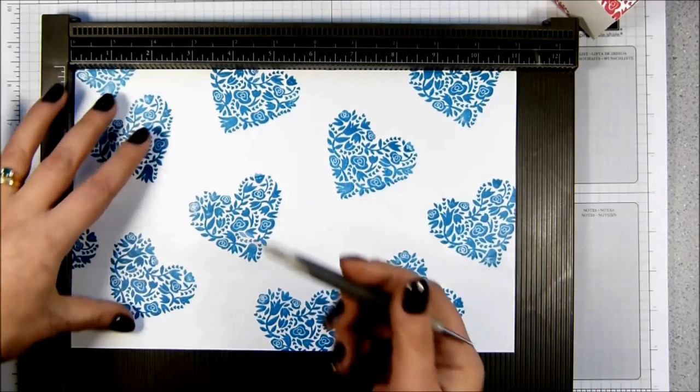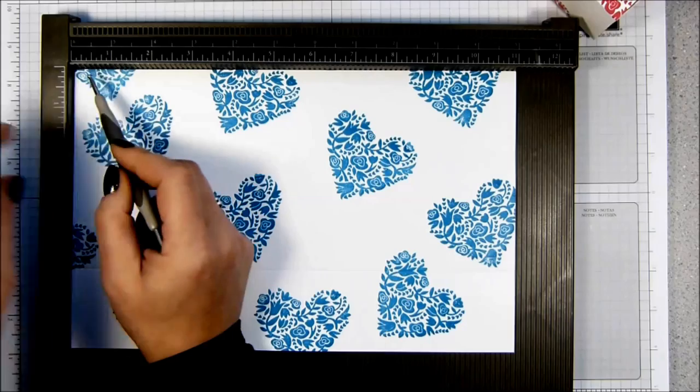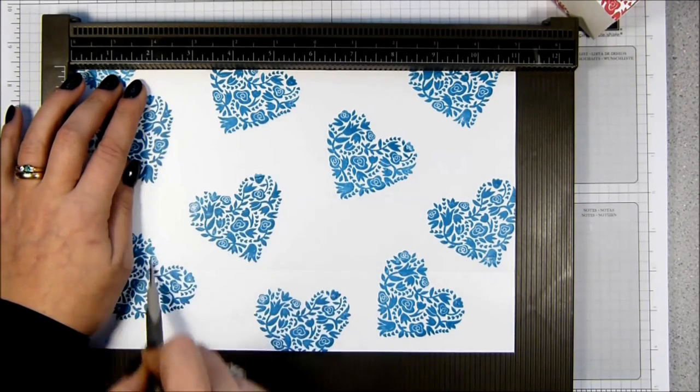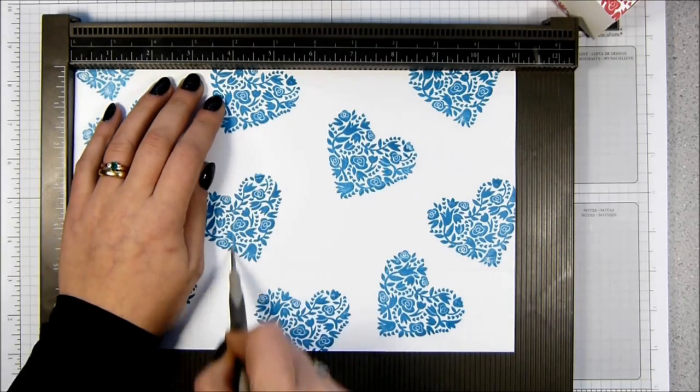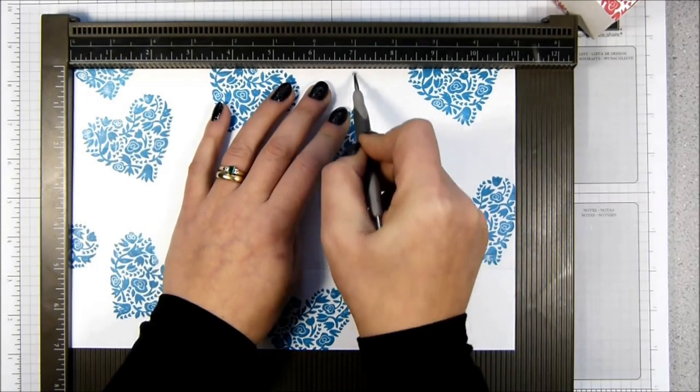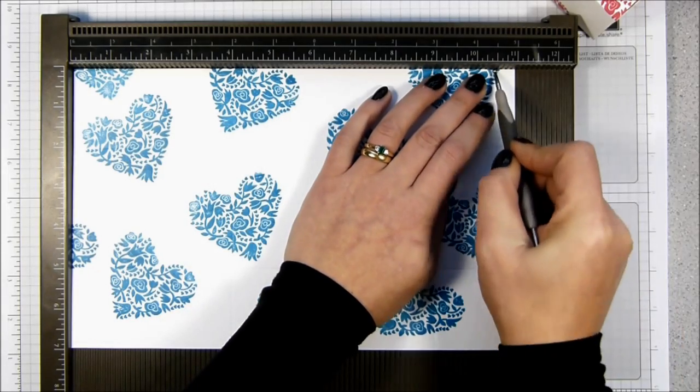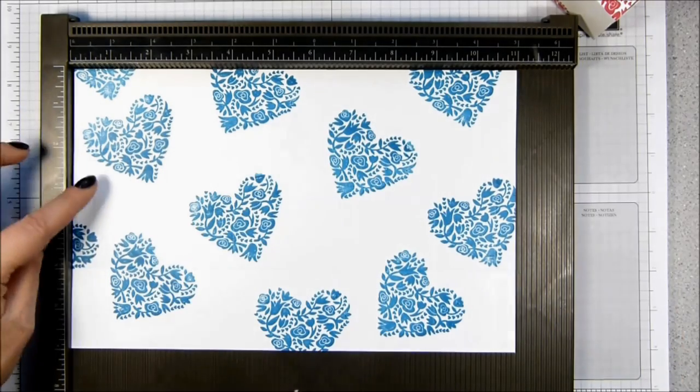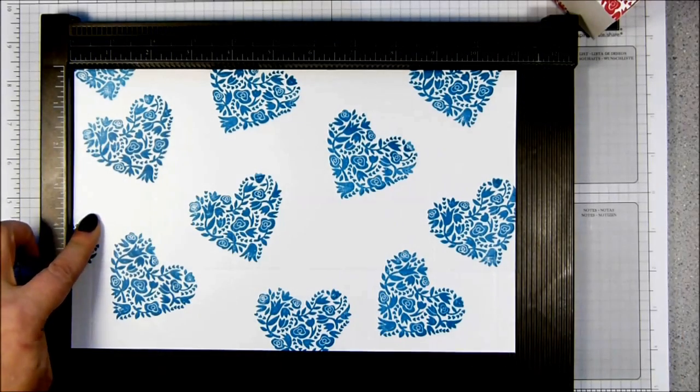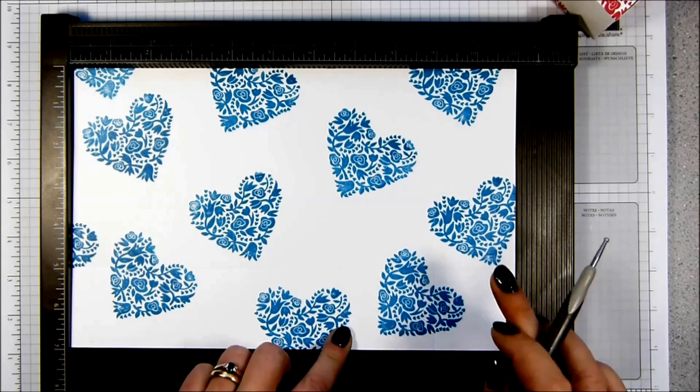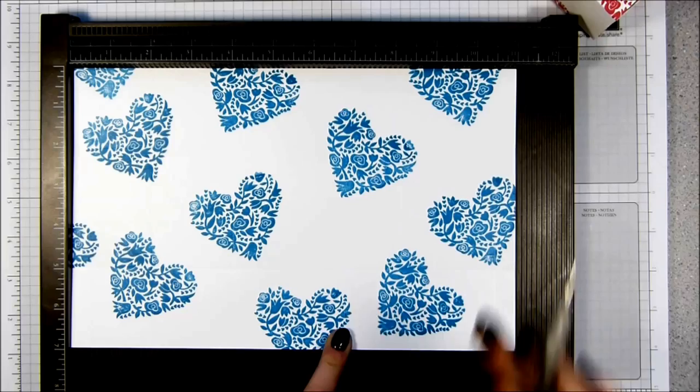And then you turn it round, and you score it this time at 1.5, which is down there, 2 inches, 4 inches, 7, 9, and 10.5. And that, in metric, is 1.5, 5, 10, 17.5, 22.5, and 26.